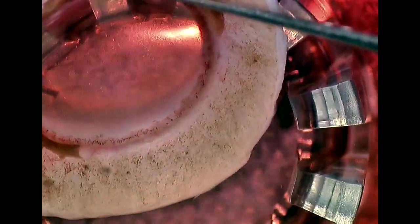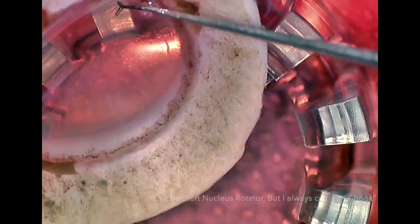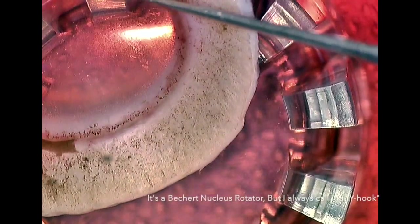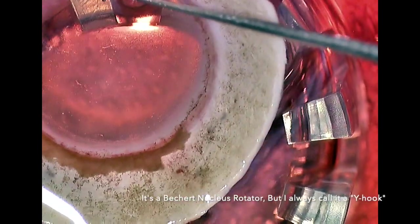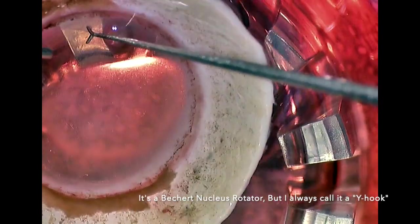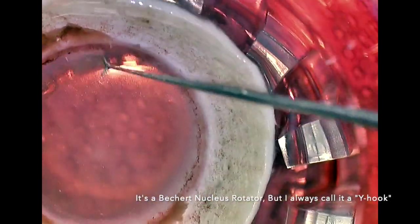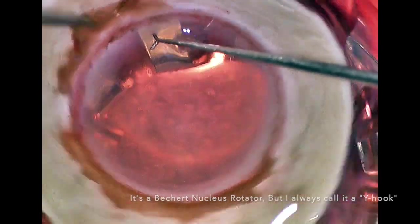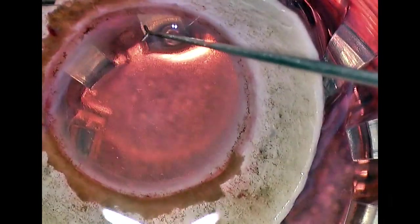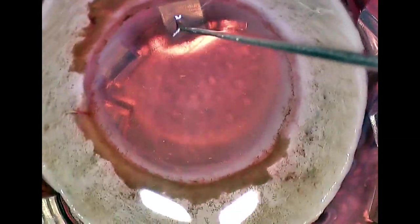We begin the procedure using a Y-hook, and we score the peripheral corneal endothelium and Descemet's membrane using that Y-hook. It's a little bit out of the frame right now, but basically what we do here is use the Y-hook and one of the posts from the corneal chamber.